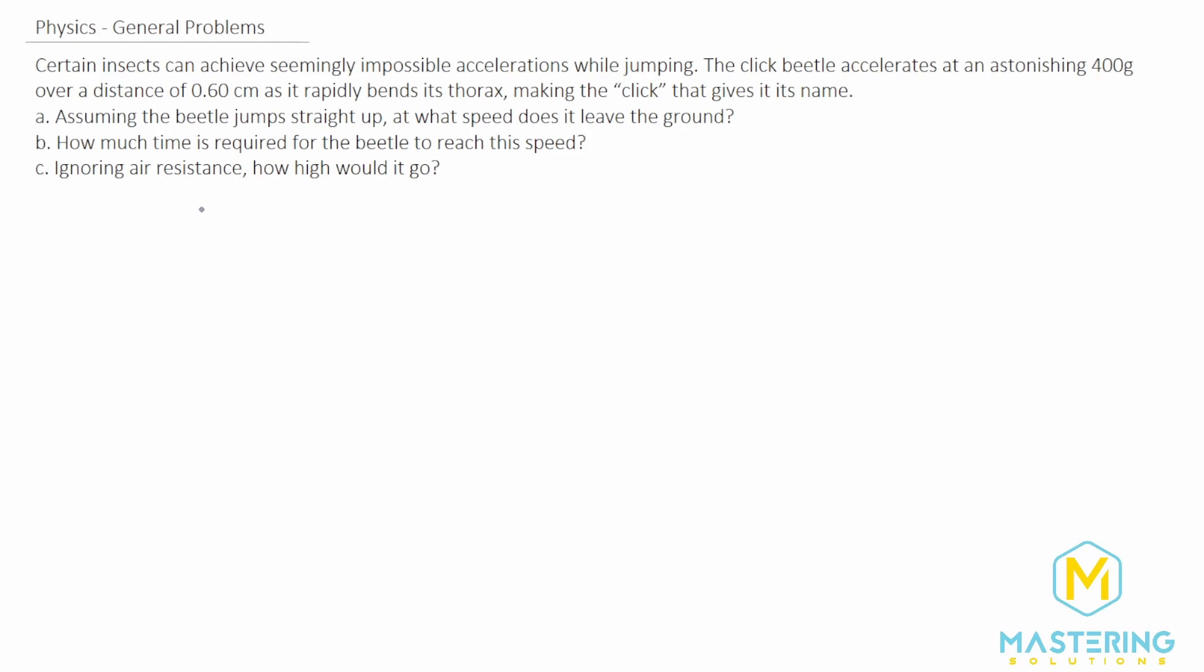They say for part A, assuming that it jumps straight up, what speed does it leave the ground? So before we get into it, let's make a list of our variables. The initial velocity before it's jumping, obviously, is 0 meters per second.